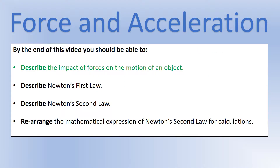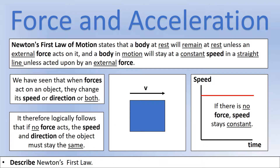That finishes describing the impact of forces on the motion of an object. Let's have a look at Newton's first law. Newton's first law states that a body — just like an object — at rest will remain at rest unless an external force acts on it. An object that is stationary will stay stationary unless a force from another object acts on it.